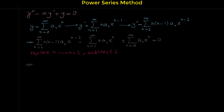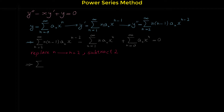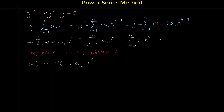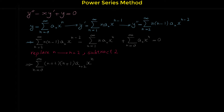So we get the shifted power series: we replace every n with n plus two, so this n becomes n plus two, n plus two minus one is n plus one, and aₙ₊₂ x to the power of n plus two minus two equals x to the n. We wanted the power of x to be n, which we achieved. The starting point becomes zero because we subtracted two from the original starting point of two.